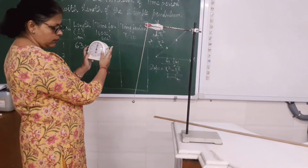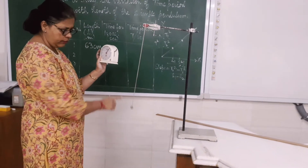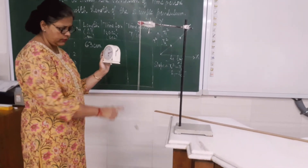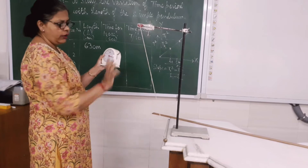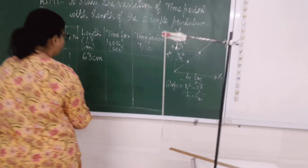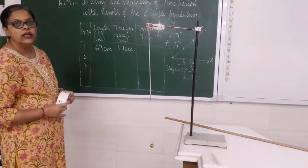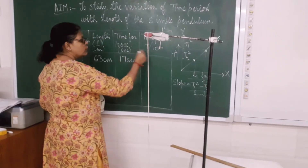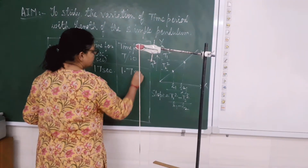I start: 1, 2, 3, 4, 5, 6, 7, 8, 9, 10 — stop. Now in my stop watch it is showing 17 seconds. So the time taken for 10 oscillations is 17 seconds. What about time period? I will divide it by 10 because 10 oscillations is taking 17 seconds. So therefore 1 oscillation — time period, the time taken to complete 1 oscillation, will be 1.7 seconds.